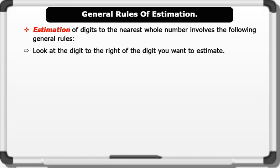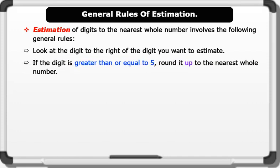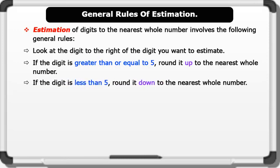If the digit is greater than or equal to 5, round it up to the nearest whole number. If the digit is less than 5, round it down to the nearest whole number.